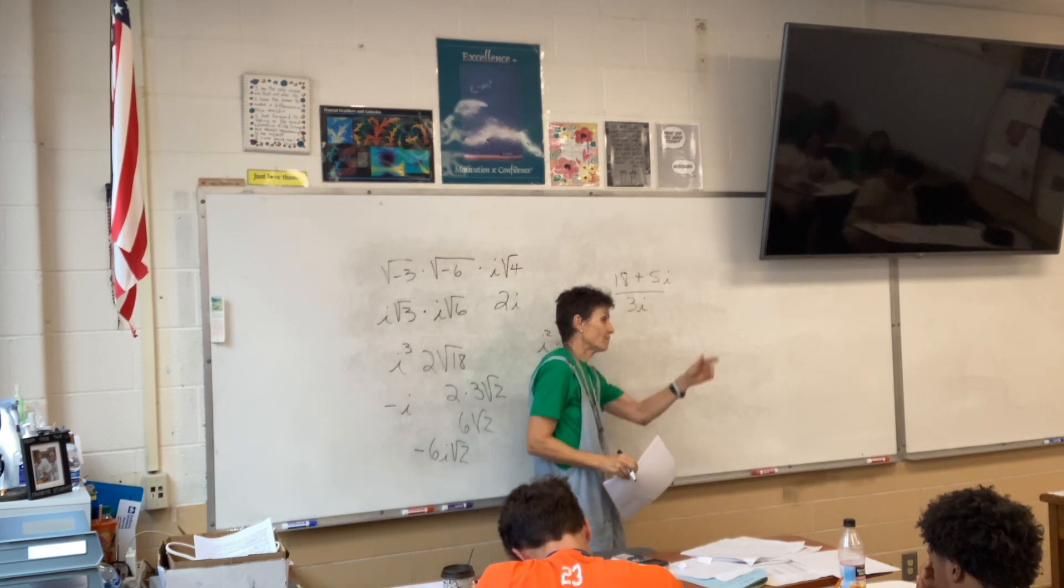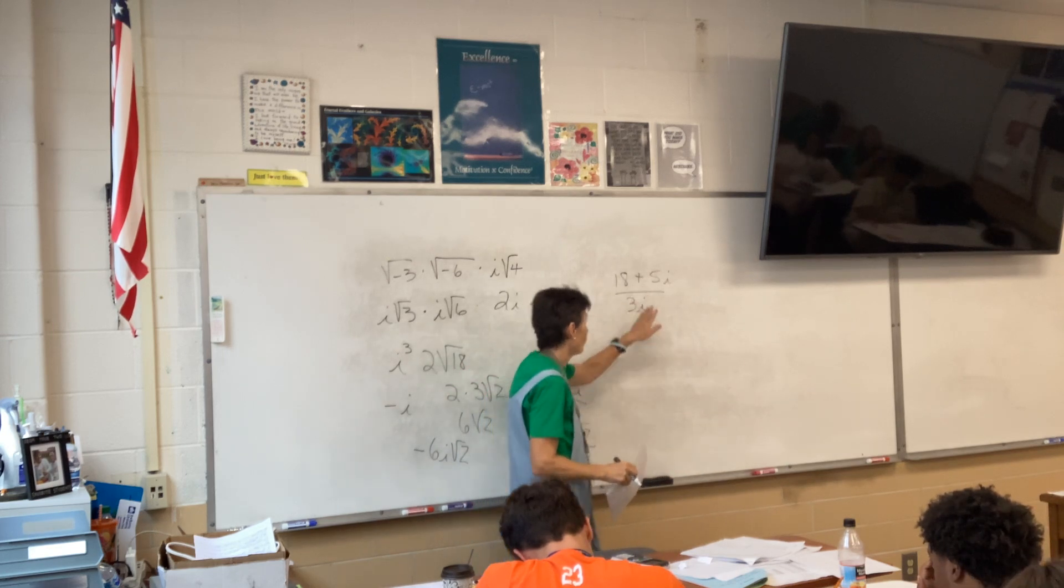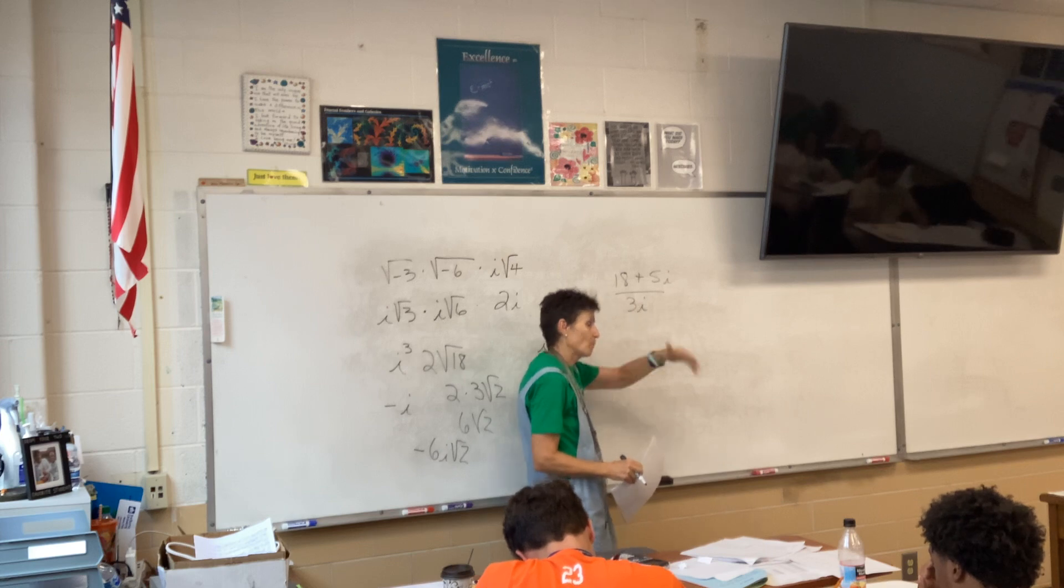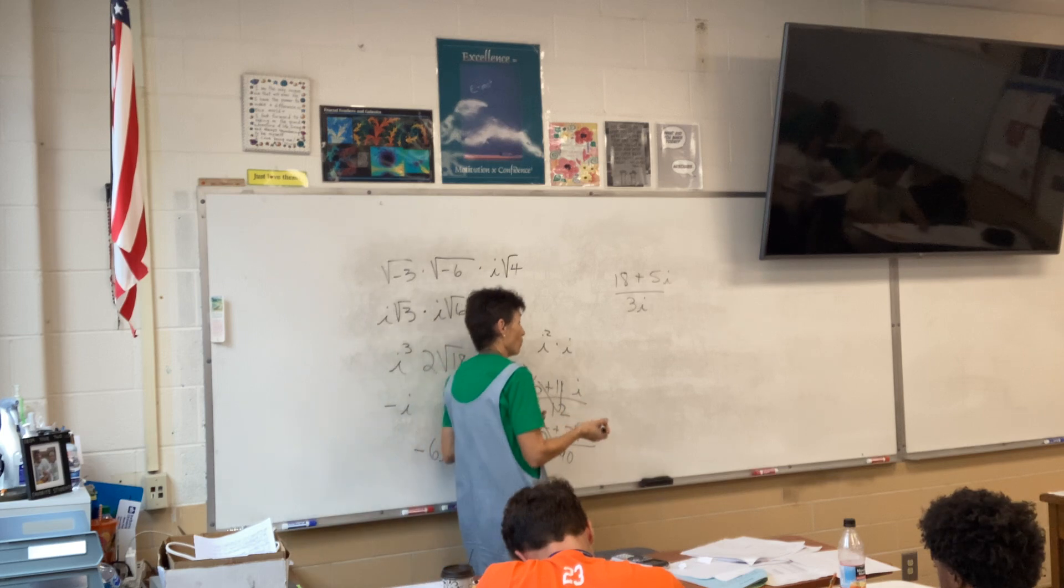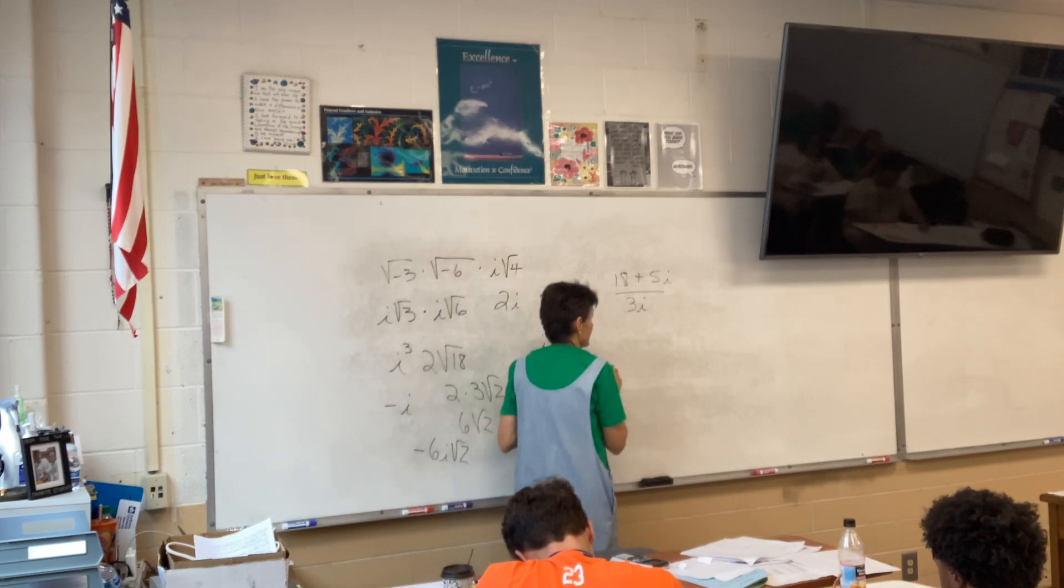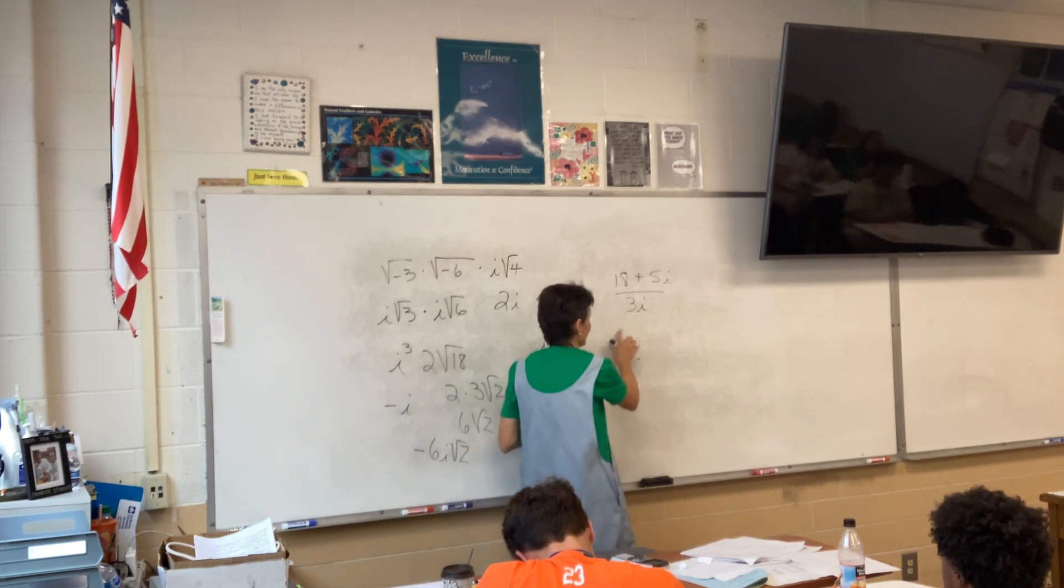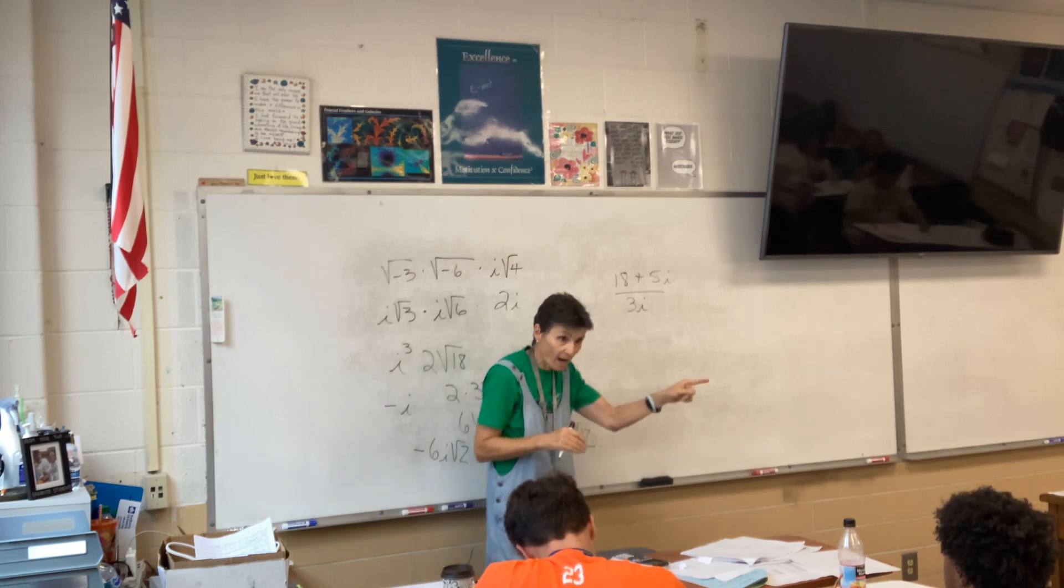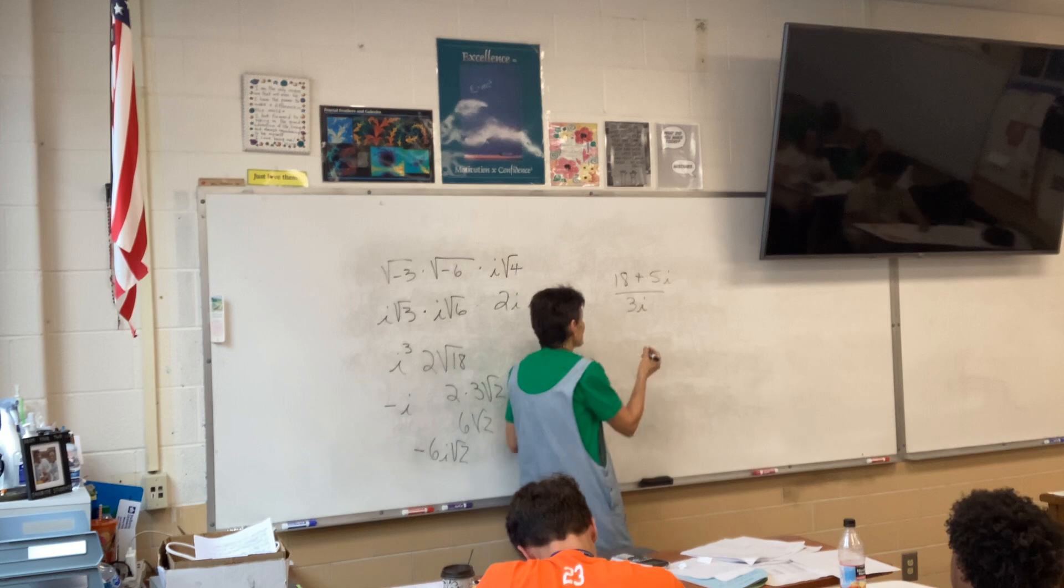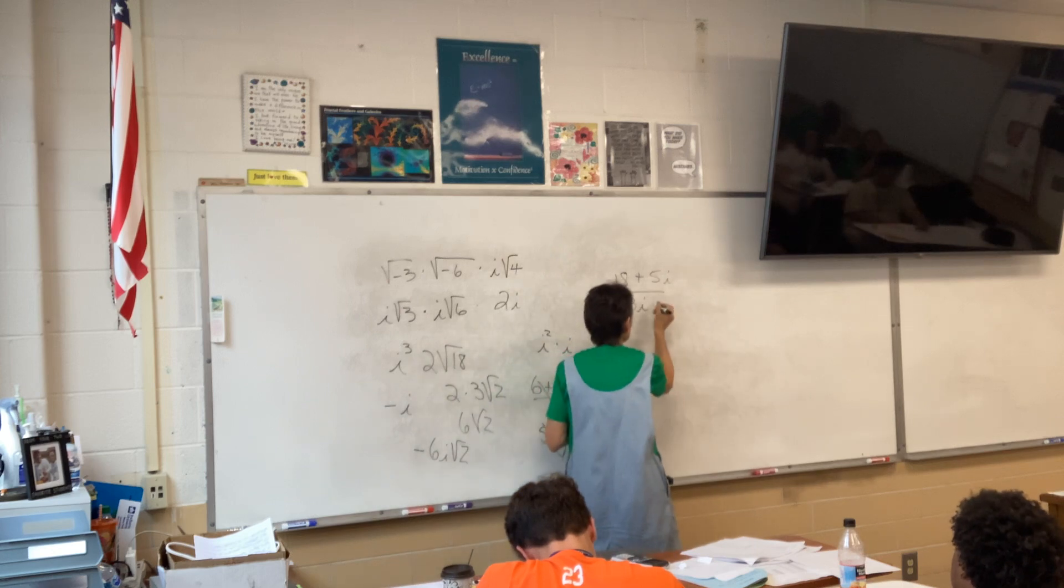11B. Well, the rule states that you cannot have an i in the denominator. And you might be wondering why, but let's go back. Let's go back to the original rule, which was you can't have a radical in the denominator. What's i? A radical in the denominator.